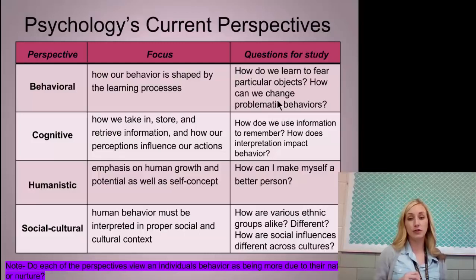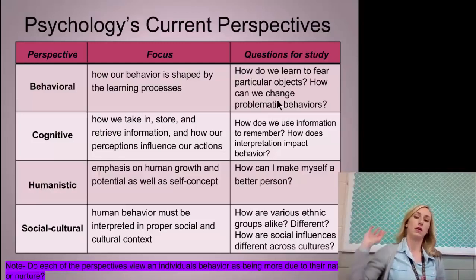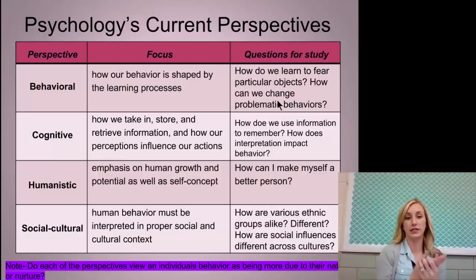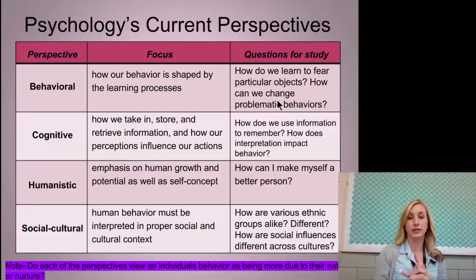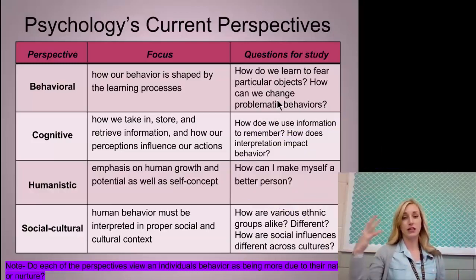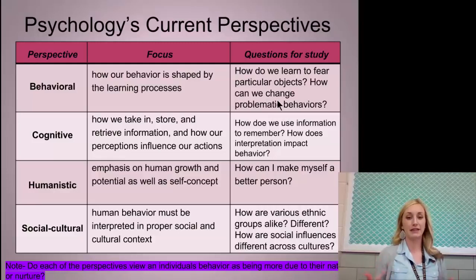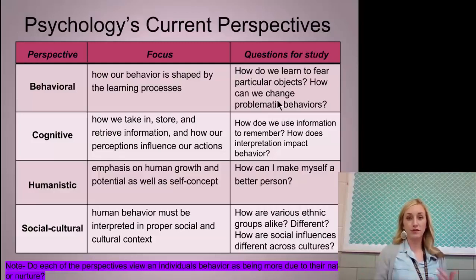Humanistic emphasizes human growth and the self — write 'self' really big in your notes, as there's an overemphasis on the self. The big study question is: how can I make myself a better person and reach my full potential? Buzzwords are the self, self-actualization, and full potential — all towards the hippie viewpoint of psychology, which is humanism. Social culture takes social influences and the norms and ideas of our culture and how that influences our behavior — buzzwords being peer groups, family, and cultural norms.